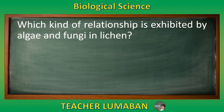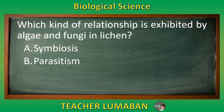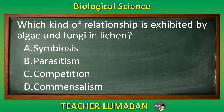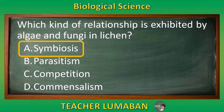Which kind of relationship is exhibited by algae and fungi in lichen? Letter A: symbiosis. Letter B: parasitism. Letter C: competition. Letter D: commensalism. The correct answer is letter A, symbiosis. Symbiosis is the kind of relationship exhibited by algae and fungi in lichen.